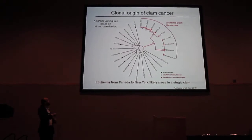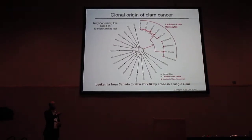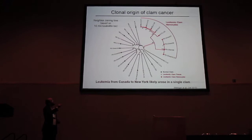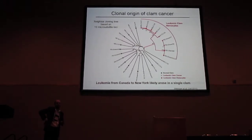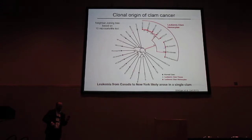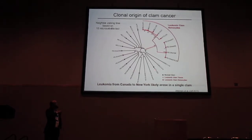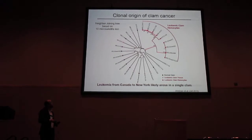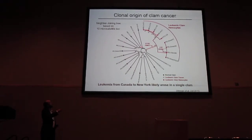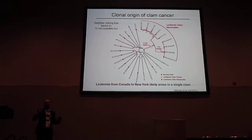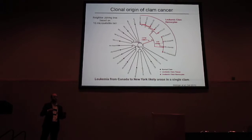We looked at about ten different microsatellites and built a phylogenetic tree based on the distance matrix. The neoplastic cells all cluster in one branch, with slight variation between the Prince Edward Island and Maine samples, but they are completely separate from all the normal individuals and from all the solid tissue genotypes of the diseased individuals. Additionally, we looked at mitochondrial sequences and found SNPs present only in these cancer cells and not in any normal samples, corroborating this single clonal amplification of a cancer spreading through the population.